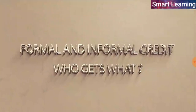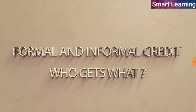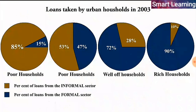Cheap and affordable credit is crucial for the country's development. This graph shows the importance of formal and informal sources of credit for people in urban areas. The people are divided into four groups from poor to rich as shown in the graph. You can see that 85% of the loans taken by poor households in the urban areas are from the informal sources. Compare this with the rich urban households — only 10% of their loans are from the informal sources while 90% are from the formal sources.